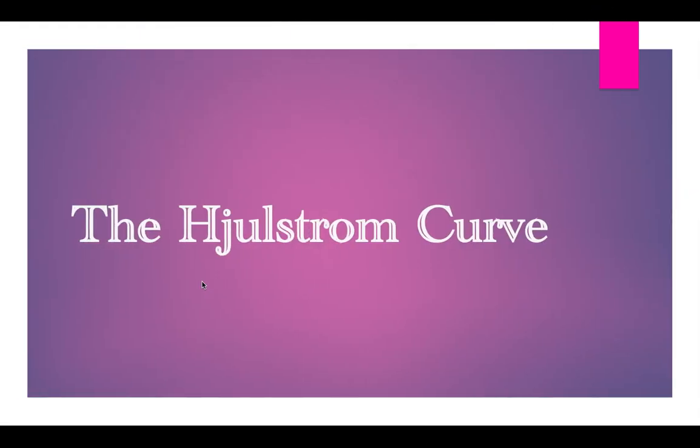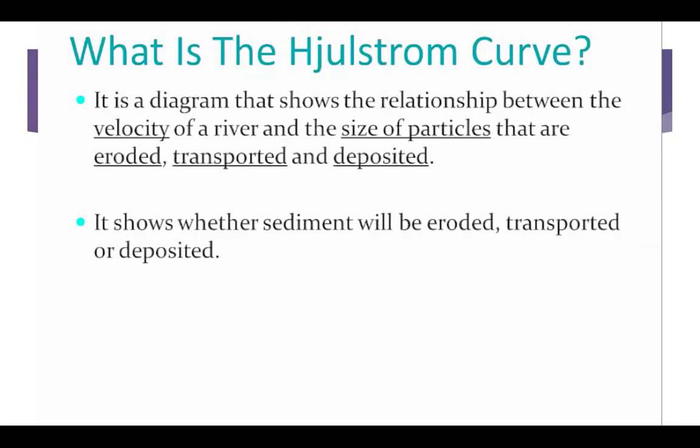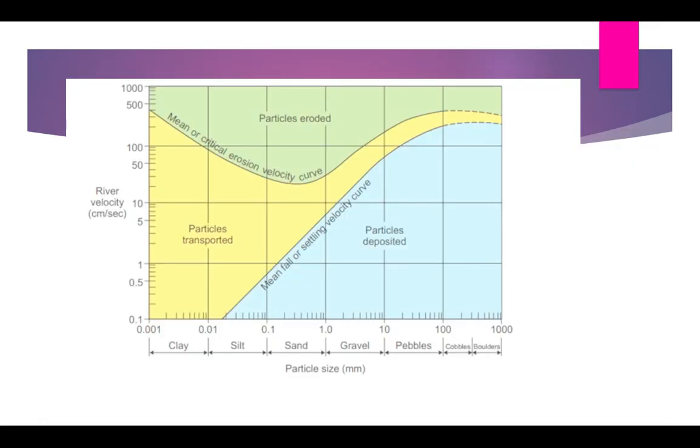Let's start with the definition. The Hjulstrom curve is basically a kind of graph, a diagram which gives you the relationship between size of particles—different particles like pebble, cobble, boulder, clay, sand—with velocity of the river. Finally, it will show you under which velocity condition and particle size these sediments are either getting eroded, deposited, or transported.